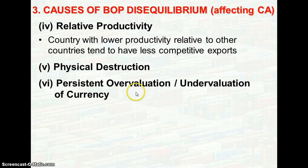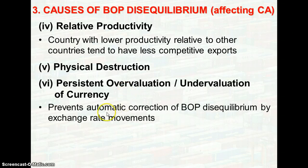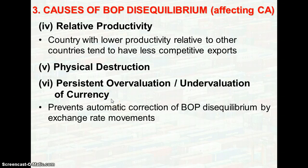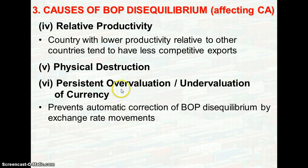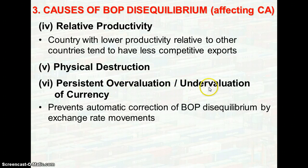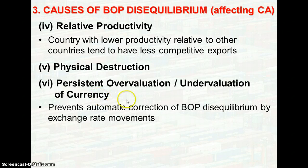The next point is persistent overvaluation or undervaluation of the currency, which prevents automatic corrections of BOP disequilibrium by exchange rate movements. When there is an overvaluation of the currency, it means the currency is of a higher value. This makes the country's exports less competitive to other countries and could lead to a balance of payment deficit. On the other hand, if there is an undervaluation of the currency, exports become more competitive and this might lead to a balance of payment surplus.